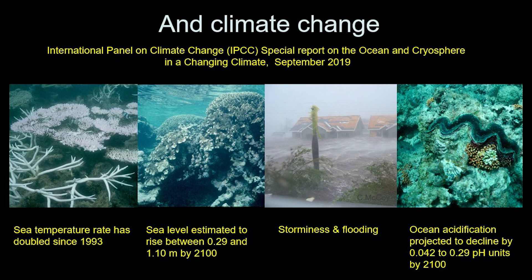Sea level is estimated to rise by over a metre by the end of this century. We are going to get more frequent storms and flooding, particularly in tropical locations. The oceans are going to acidify — become more acidic — and corals build reefs from calcium carbonate limestone, so they are particularly subject to acids which will dissolve them away.